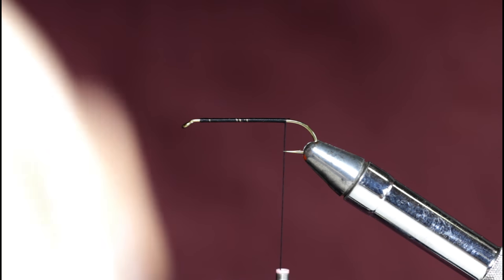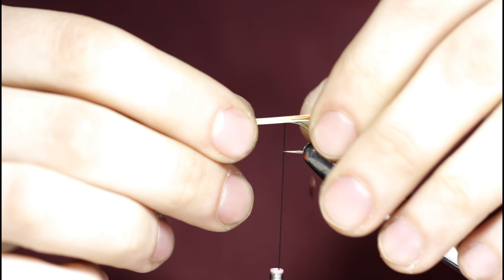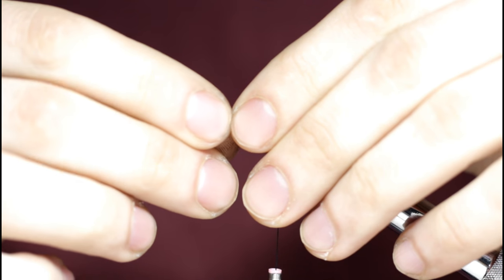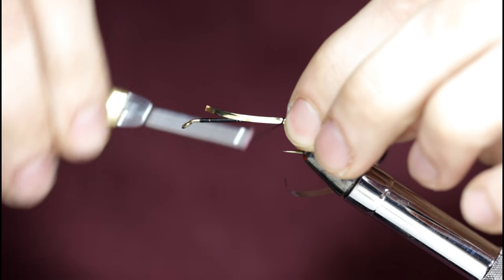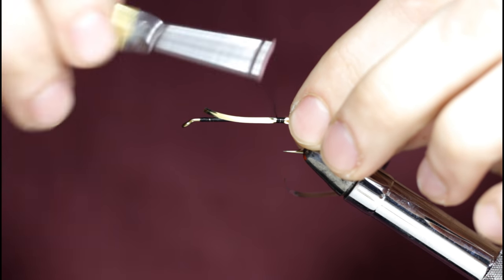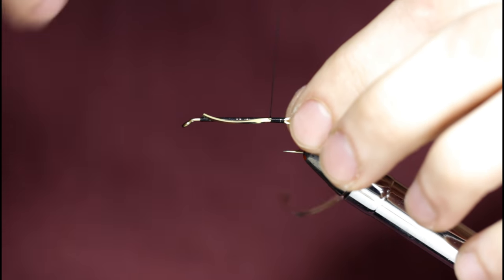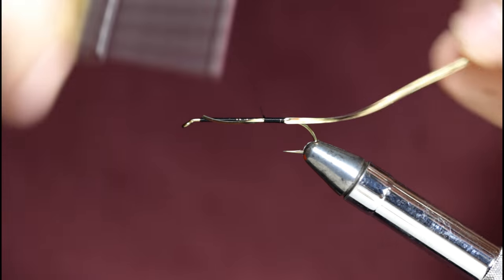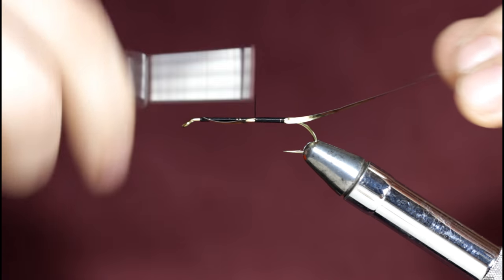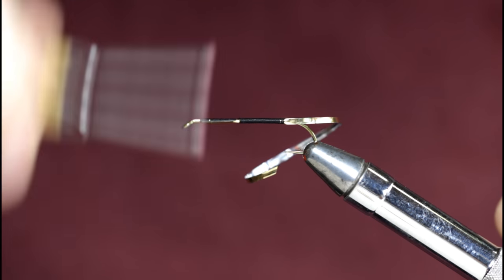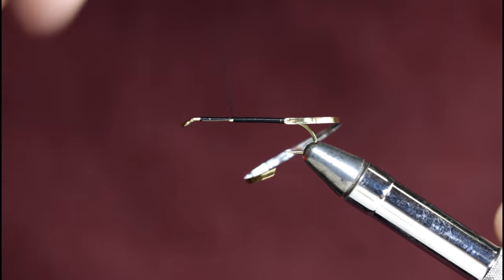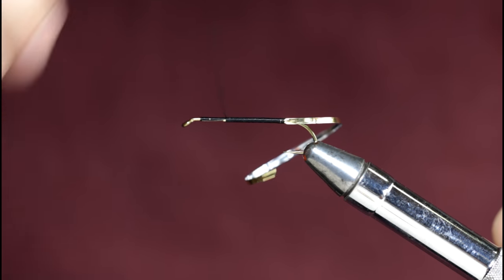I'm going to come in with some gold mylar tinsel here. This is a large tinsel. You can use any size that you want. I just think that this small fly looks cool with some large tinsel. I'm just going to tie this in from the rear and work my way forward, wrapping this forward in even touching turns towards the hook eye.